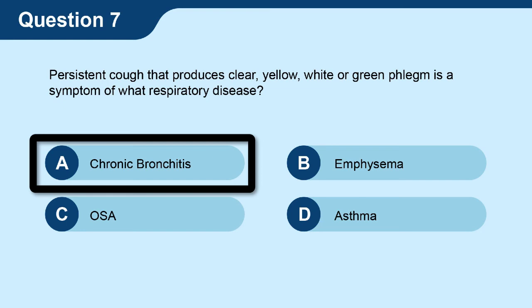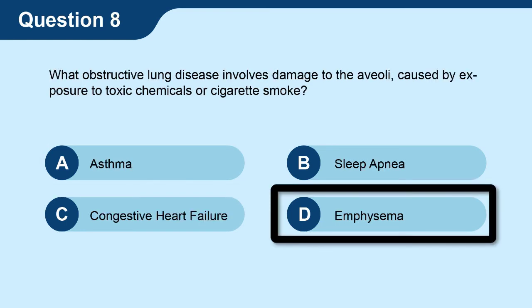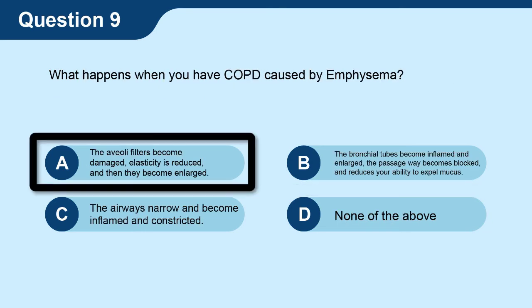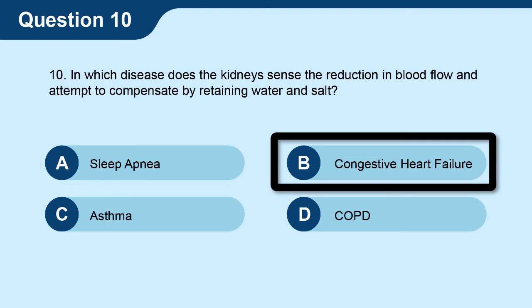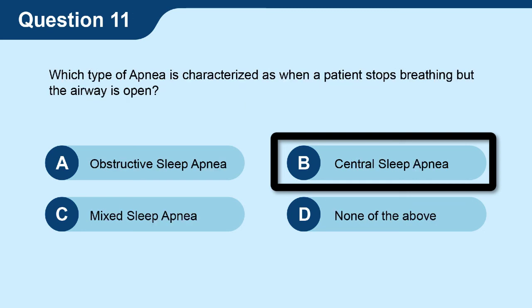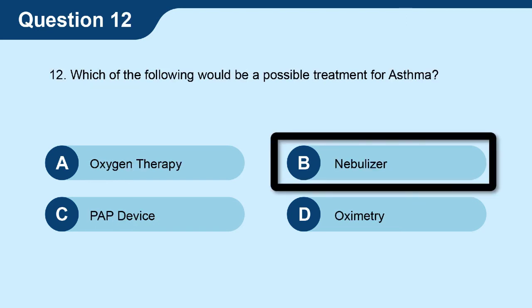Question seven: persistent cough that produces clear, yellow, white, or green phlegm is a symptom of what respiratory disease? The answer is A — chronic bronchitis. Question eight: what obstructive lung disease causes damage to the alveoli from exposure to toxic chemicals or cigarette smoke? The answer is B — emphysema. Question nine: what happens when you have COPD caused by emphysema? The answer is A — the alveoli filters become damaged, elasticity is reduced, and they become enlarged. Question ten: in which disease do the kidneys sense a reduction in blood flow and attempt to compensate by retaining water and salt? The answer is B — congestive heart failure. Question eleven: which type of apnea is characterized as when a patient stops breathing but the airway is functioning? The answer is B — central sleep apnea.